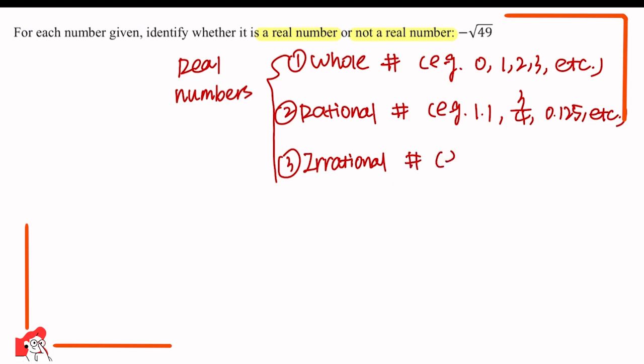The third classification is irrational numbers — for example, the square root of 2 and pi. These numbers are irrational numbers, but they are also real numbers.